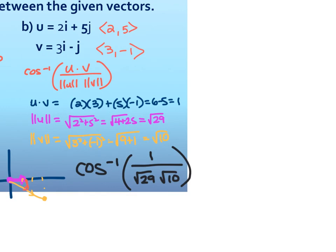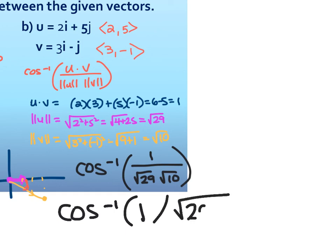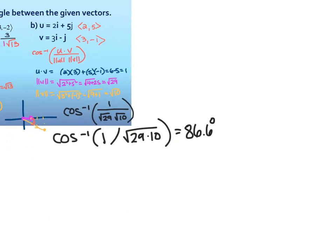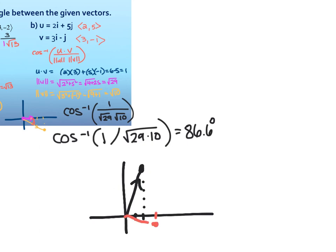So the dot product of U and V was one — total coincidence, not going to happen every time. Magnitude of U is square root 29, magnitude of V is square root 10. When you go to type it into the calculator and do cosine inverse, it opens your parentheses — you can do one divided by the square root of 29 times 10. Just be careful: if your answer has something like 10 outside your square root, make sure when typing it in that you're not putting the 10 underneath the root. From here you should get 86.6 degrees. And you can test it out: graphing two, five and three, negative one, it looks like it's pretty close to 90 degrees, which makes sense with that 86.6.